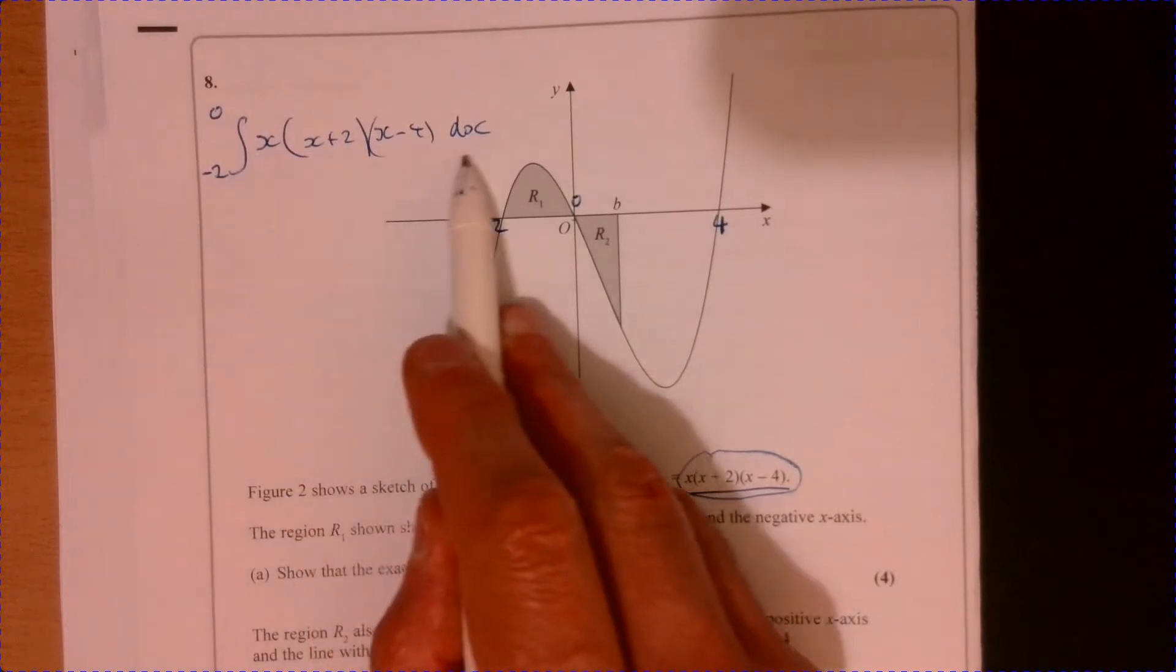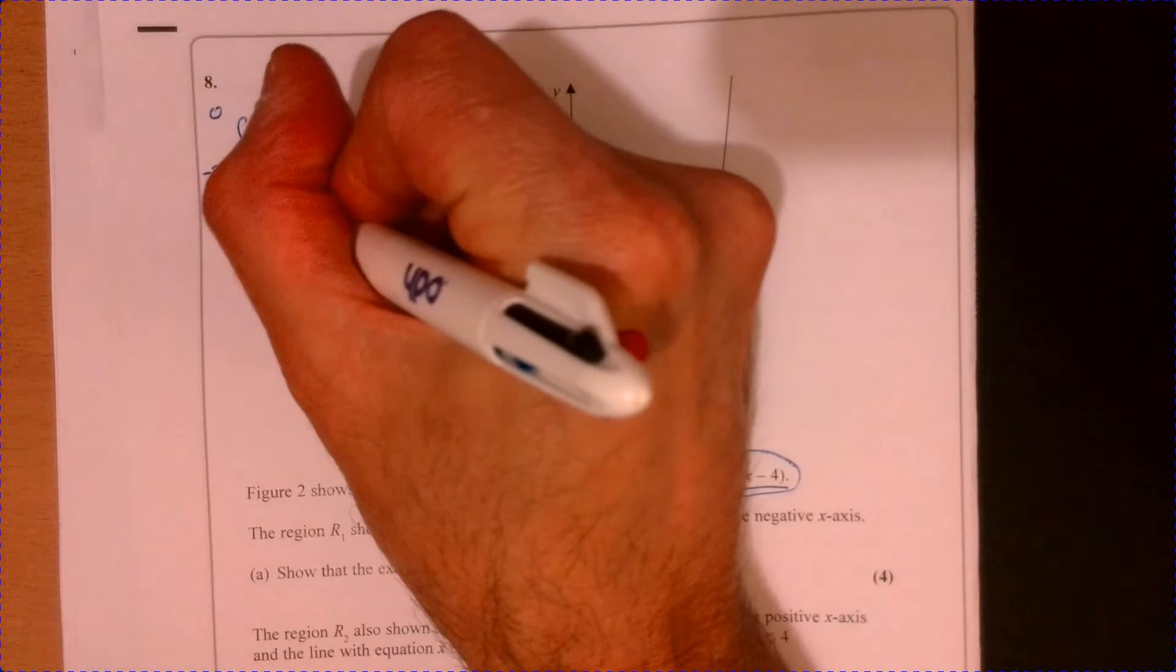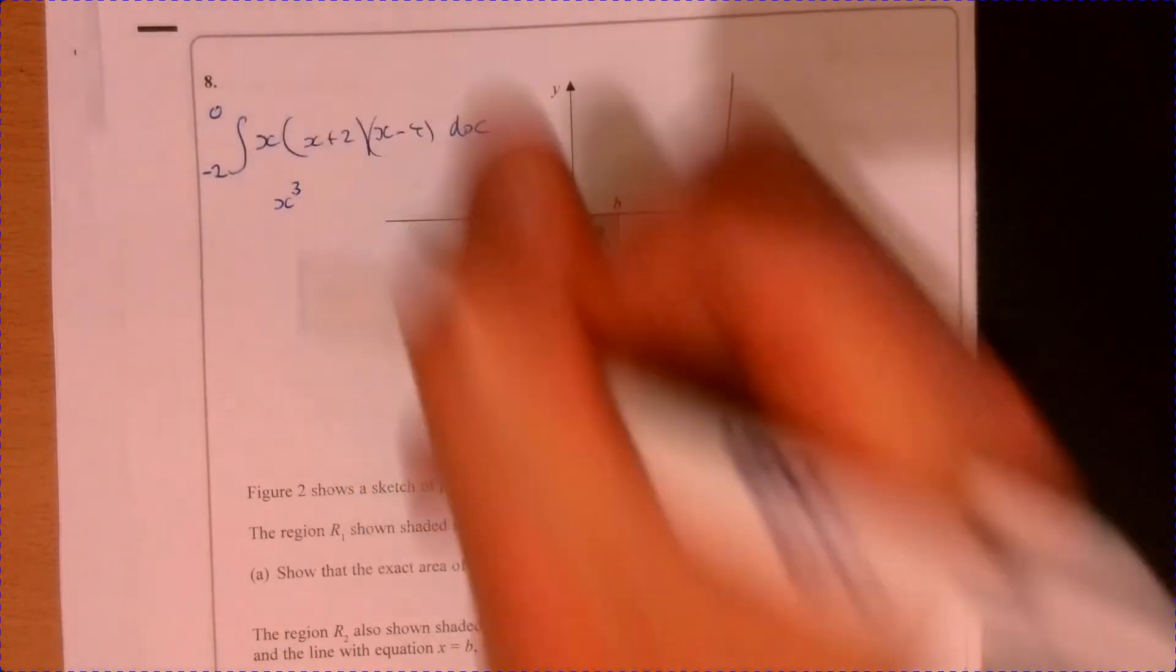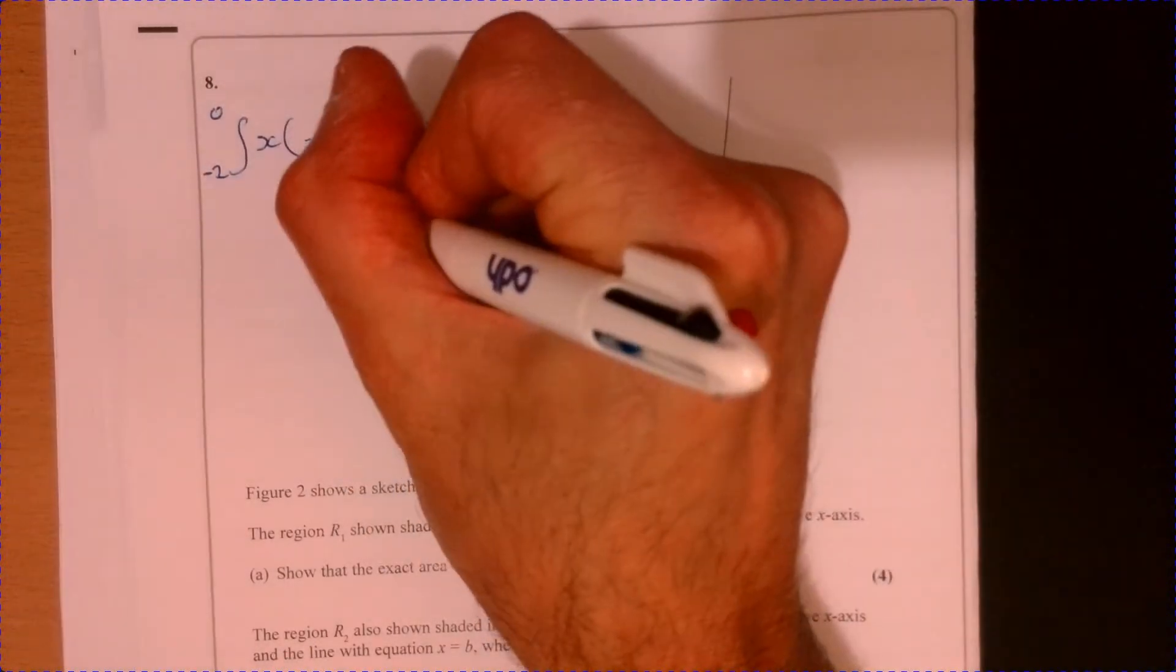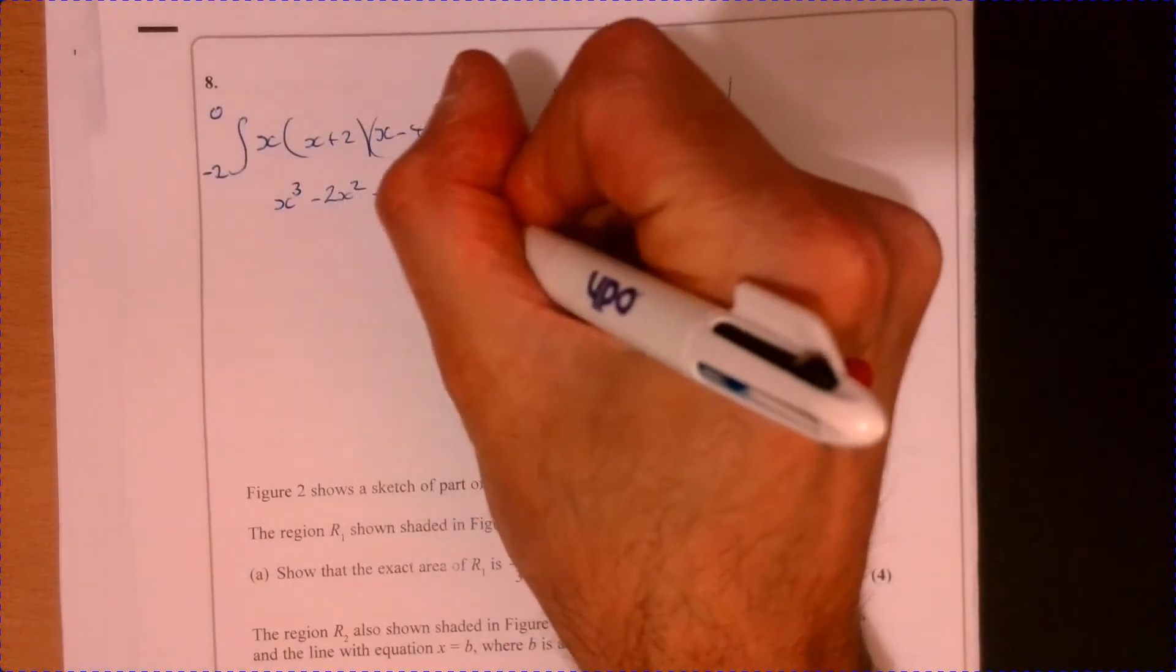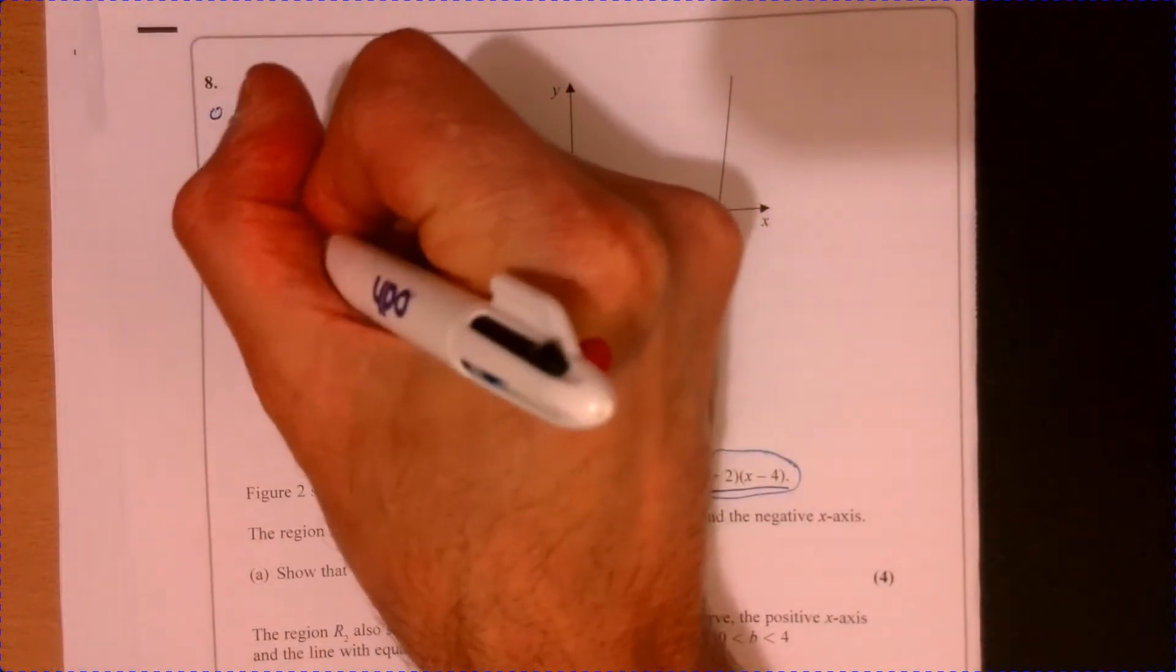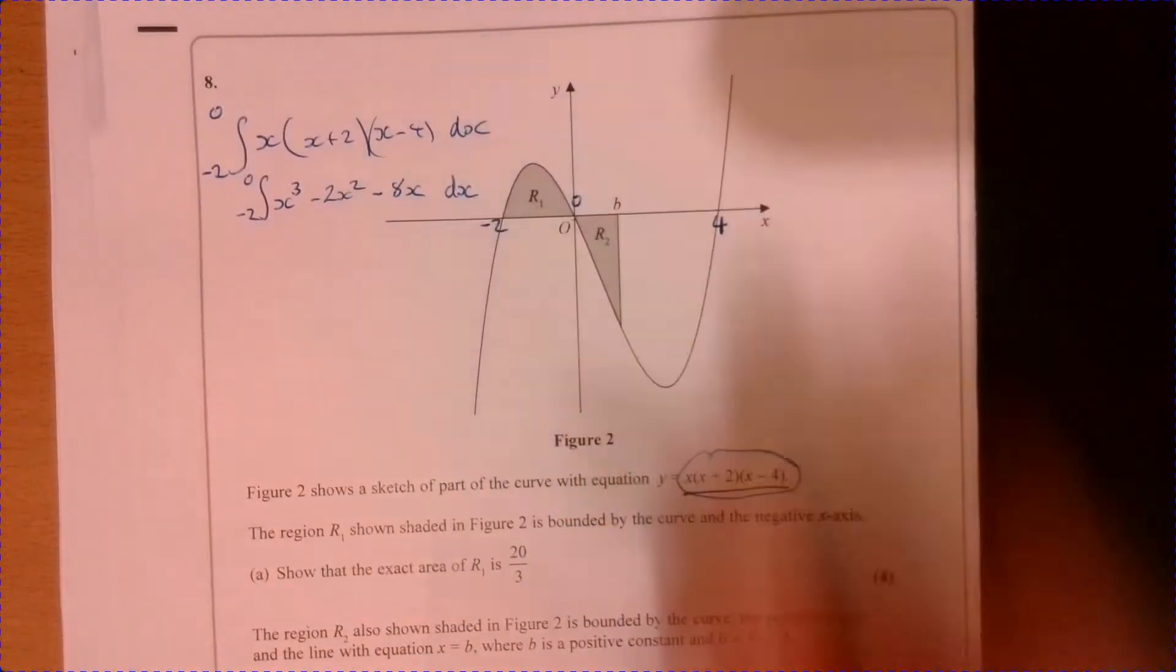Probably the easiest thing to do is just to multiply this out. So if you multiply this out, you get x cubed, take away two x squared, take away eight x. I've jumped a little bit there just because I did it myself a minute ago.